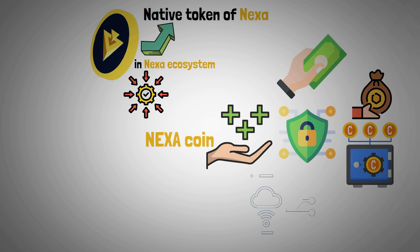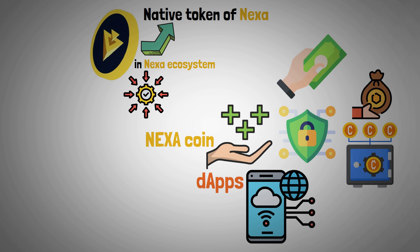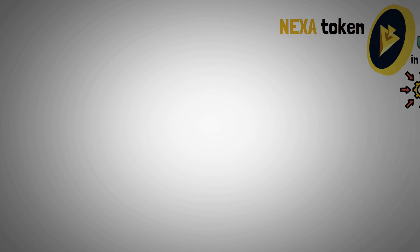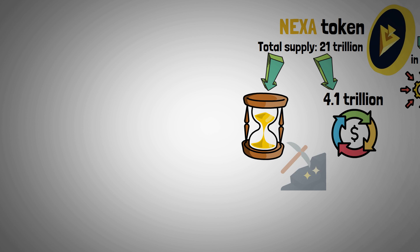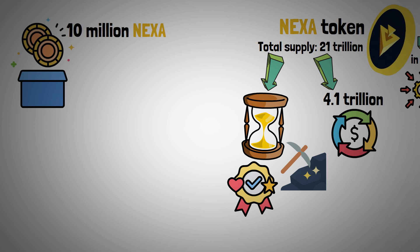The Nexa token has a total supply of 21 trillion, of which 4.1 trillion are currently in circulation. The remaining tokens will be distributed over time through mining and staking rewards. A block reward of 10 million Nexa is given to miners who actively contribute to network security. The ecosystem's decentralization and vitality are guaranteed by this mechanism.